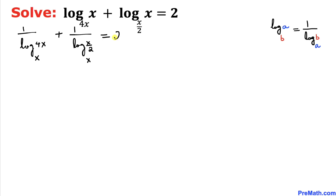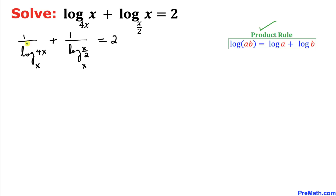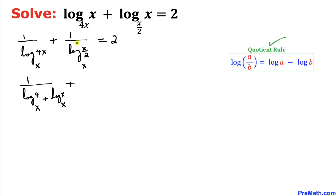Now we use the product rule to simplify the first logarithm, giving us 1 divided by (log of 4 with base x plus log of x with base x). Then we use the quotient rule to simplify the second part, giving us 1 divided by (log of x with base x minus log of 2 with base x), equals 2.